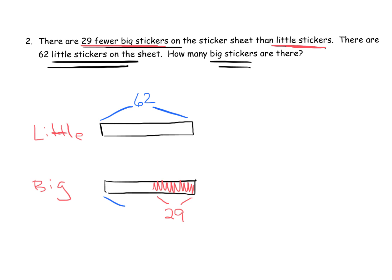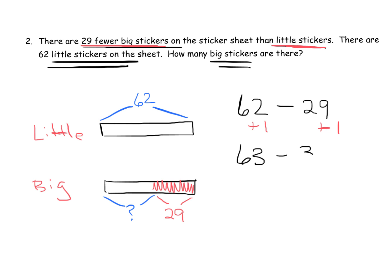We can see that to solve this we're going to do 62 minus 29. To solve it, I'll use the 'adding one' technique: 62 minus 29 equals 63 minus 30, because adding one to both numbers gives the same difference. So 63 minus 30 is 33, and that's our answer.